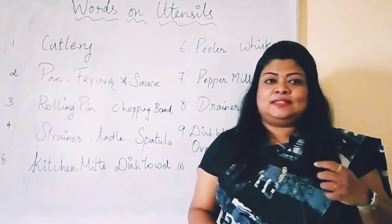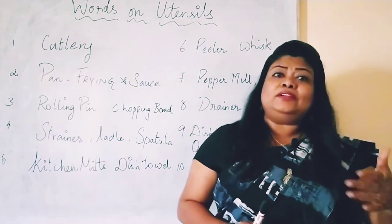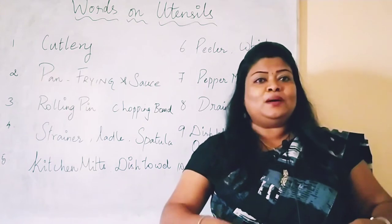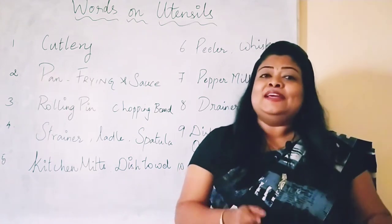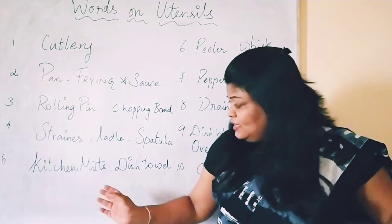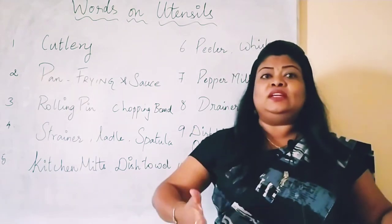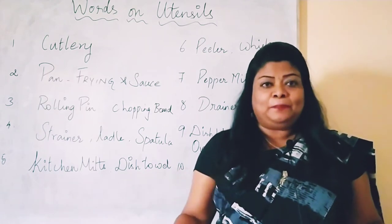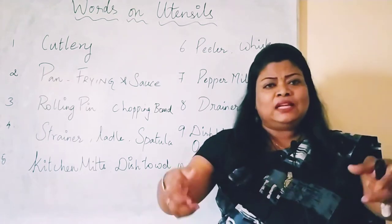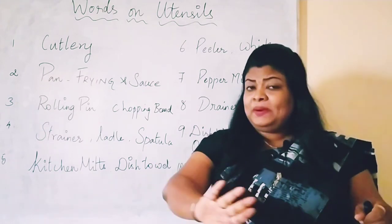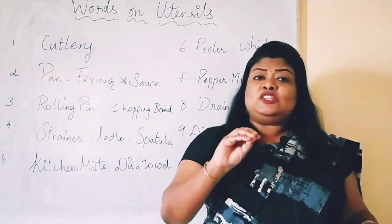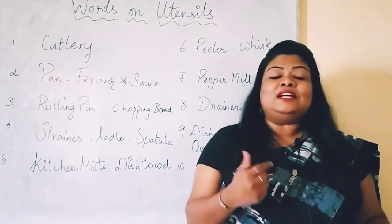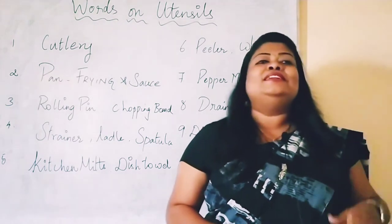Next, kitchen mitts. Kitchen mitts are what you use in the oven — when you handle hot vessels or put your hands near heat, we use kitchen mitts. And we also use a dish towel. If you stick to using a cloth for wiping plates, the proper name for it is dish towel — it is called a kitchen towel or a dish towel.